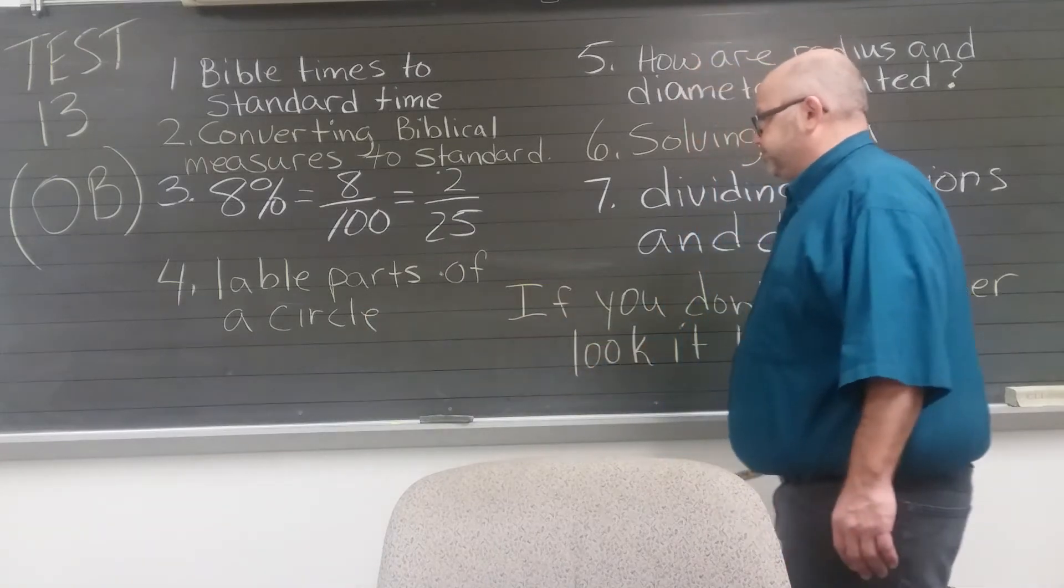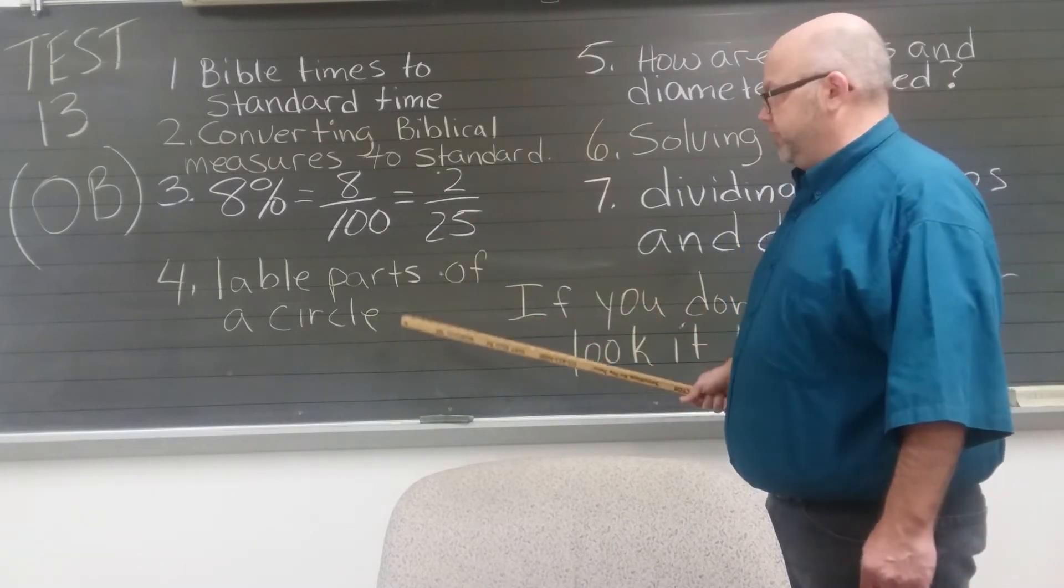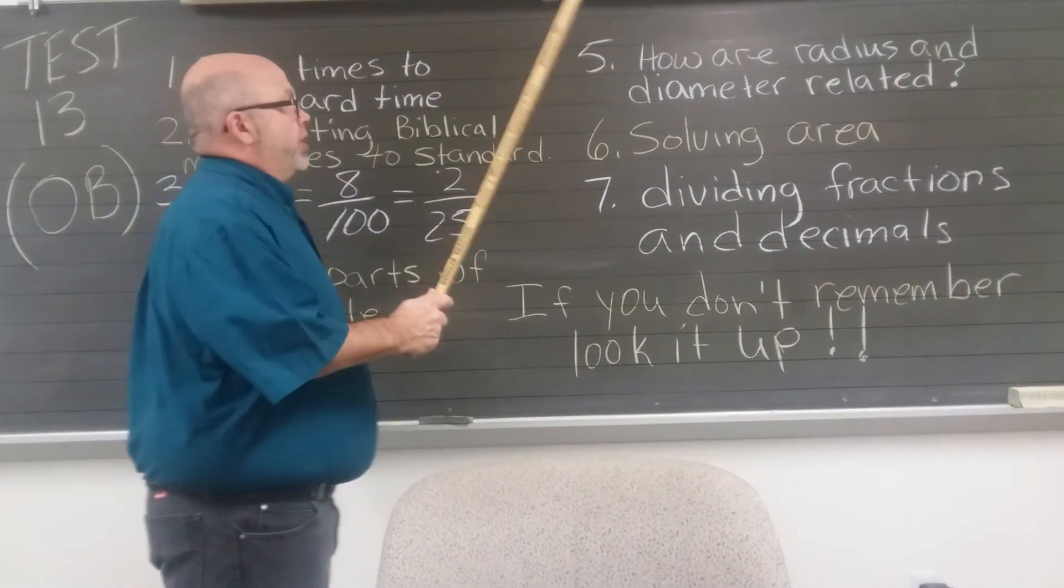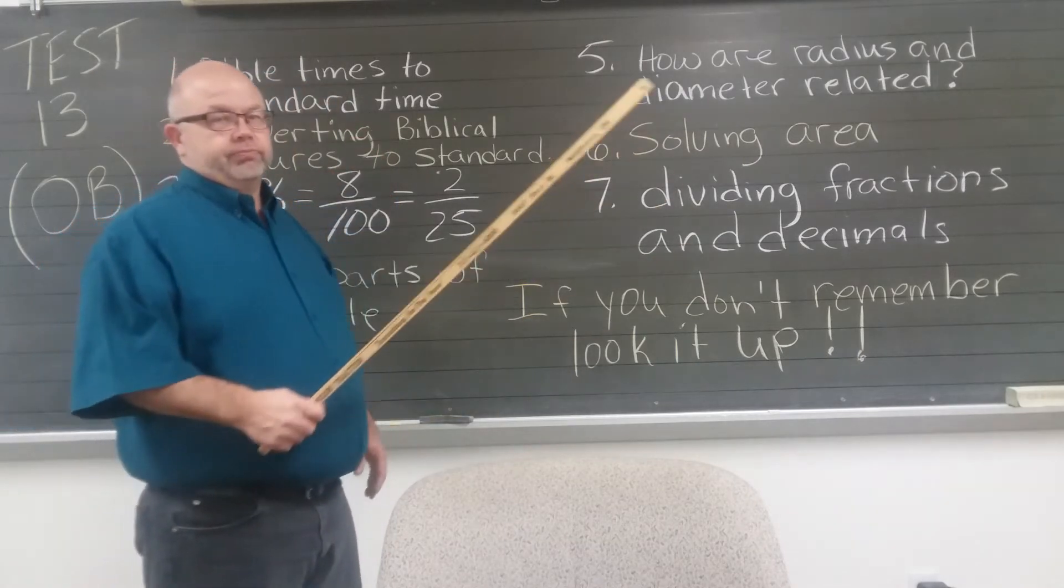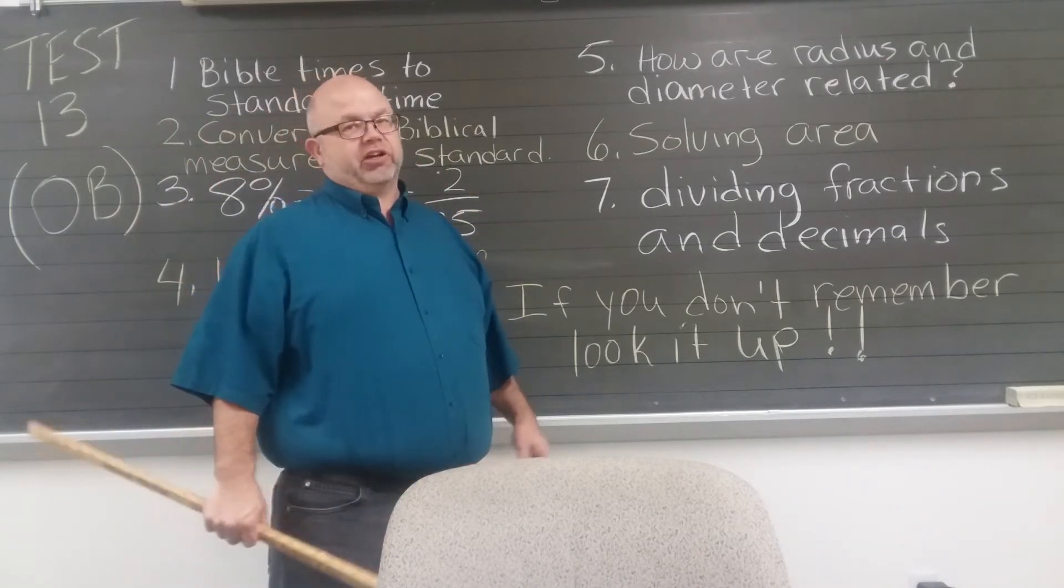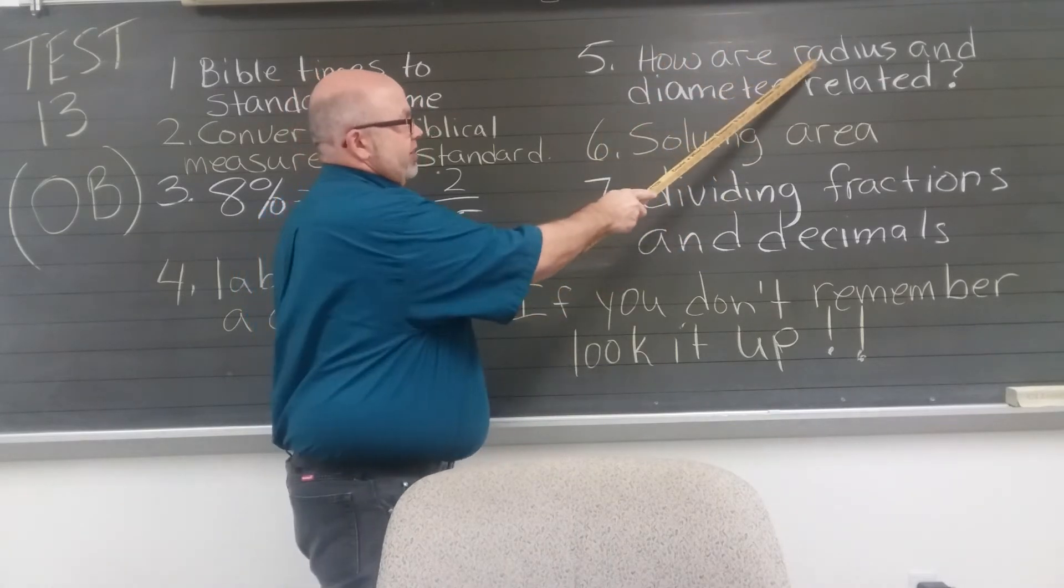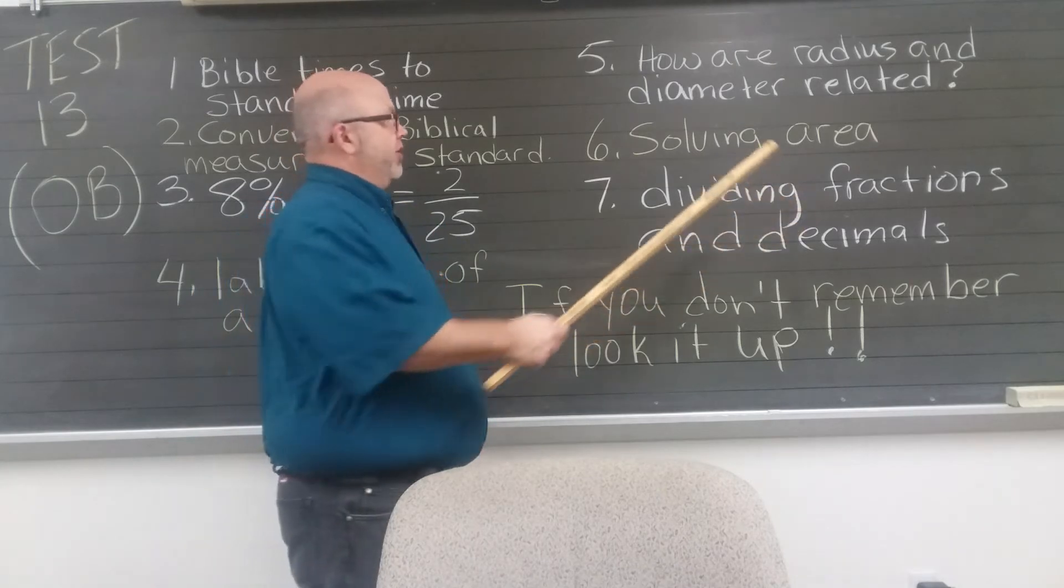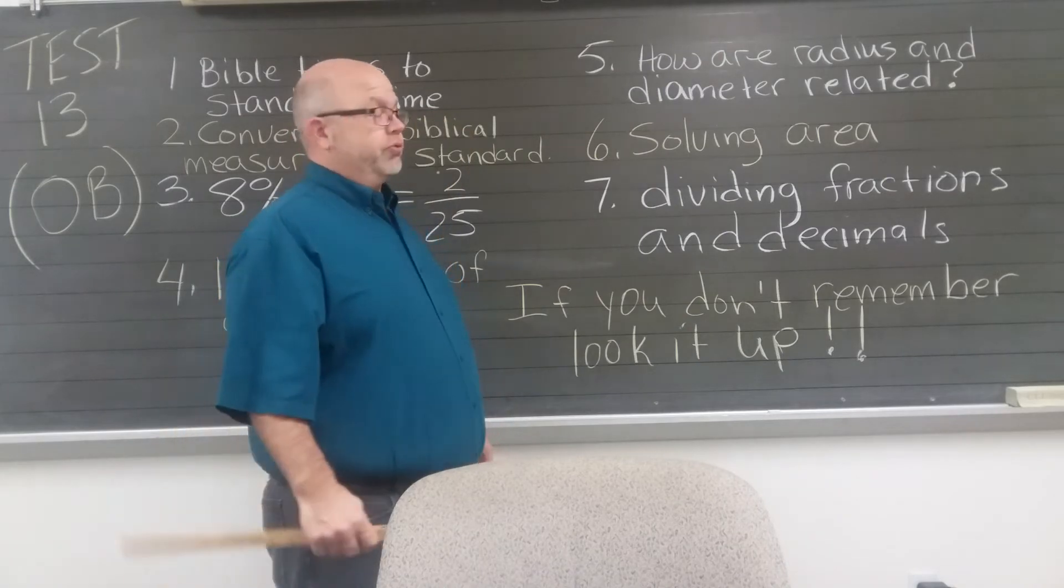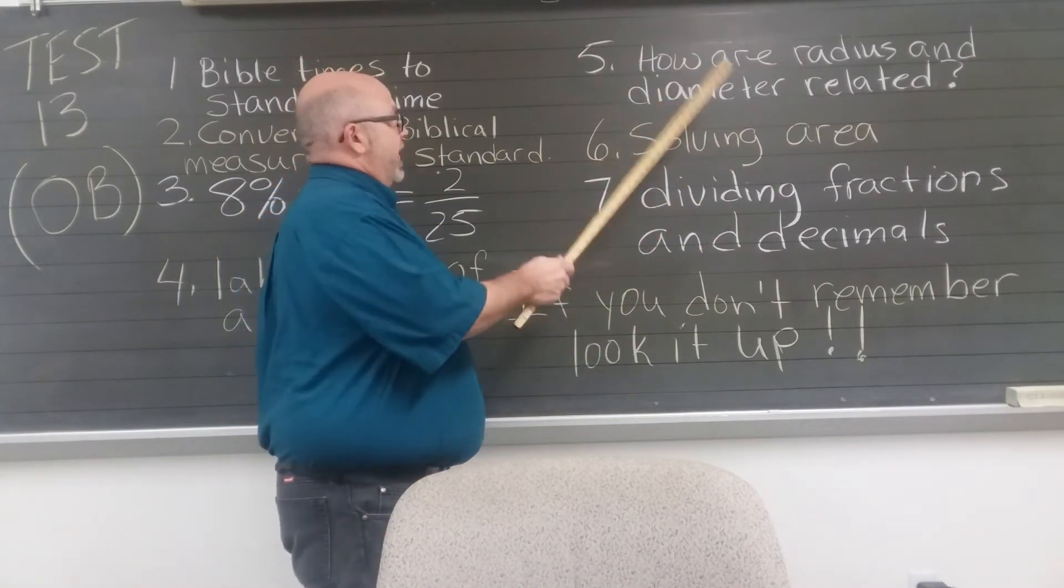Please be able to label the different parts of a circle. Find the chapter if you don't remember them. How are the radius and diameter of the circle related? Remember that radius is half of the diameter. You will have a couple of those problems where you either have the radius given or the diameter given. If you have the radius, it's radius times two equals diameter. If you have the diameter, it's diameter divided by two equals radius. Please remember to label those. Whatever you're doing, if there's a label involved, please have the proper label.